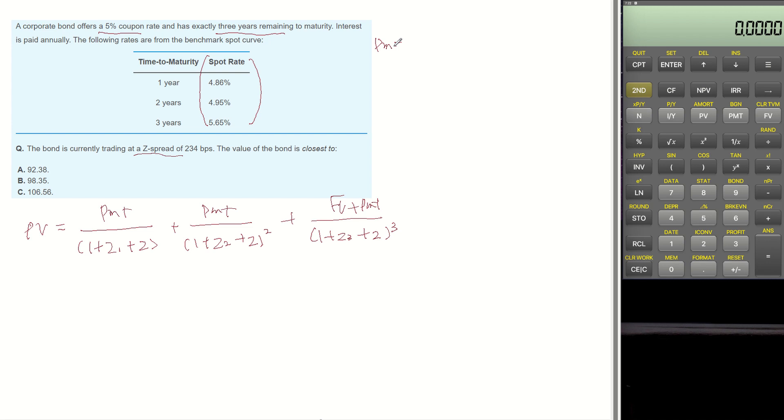Payment of the corporate bond is 5, and G-spread is 234 bps, which is 2.34% or 0.0234.